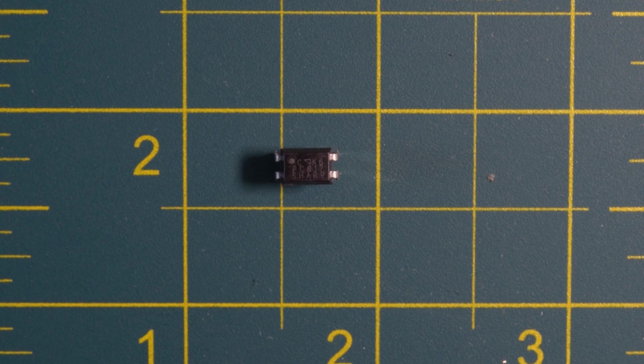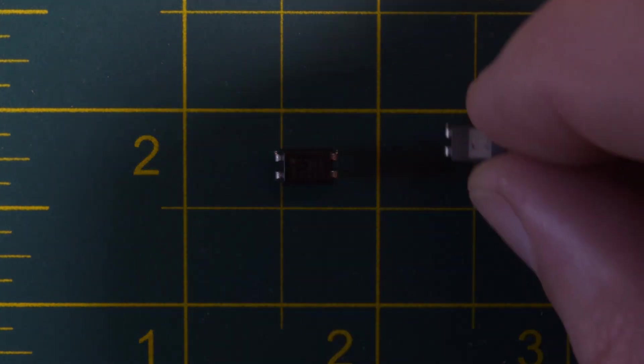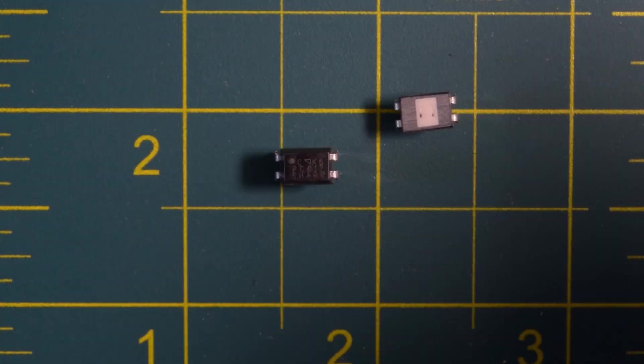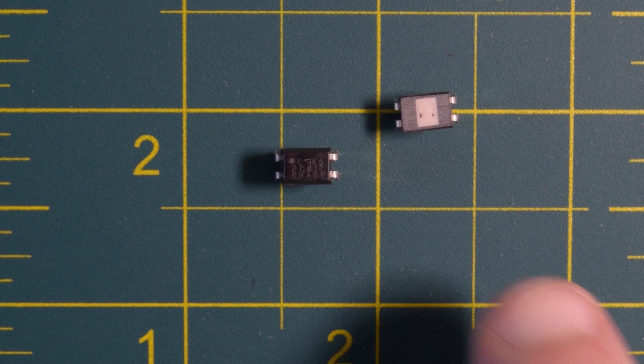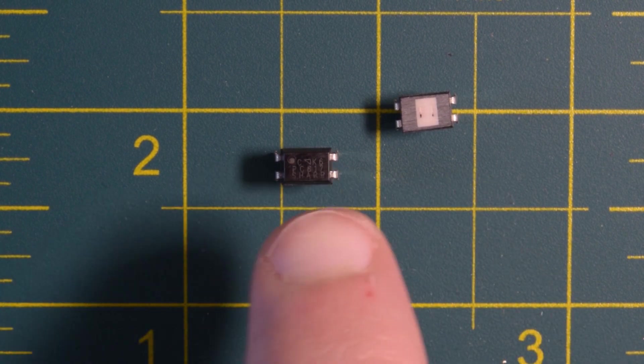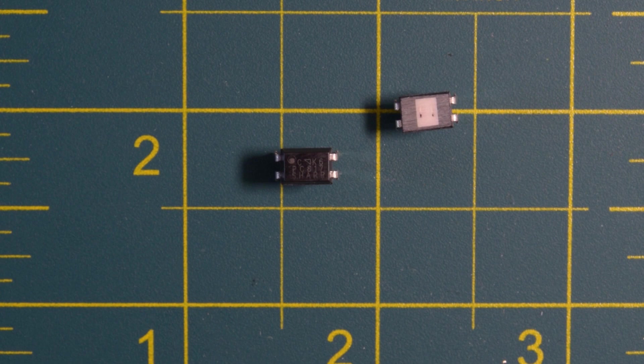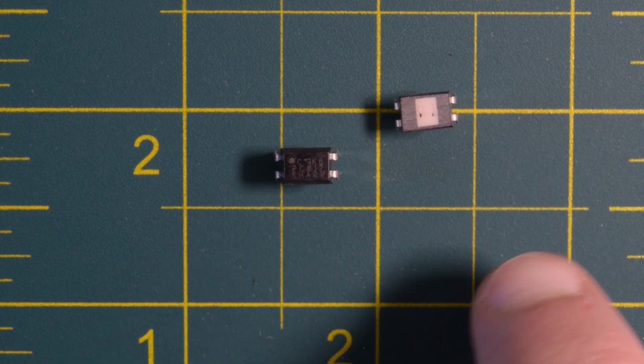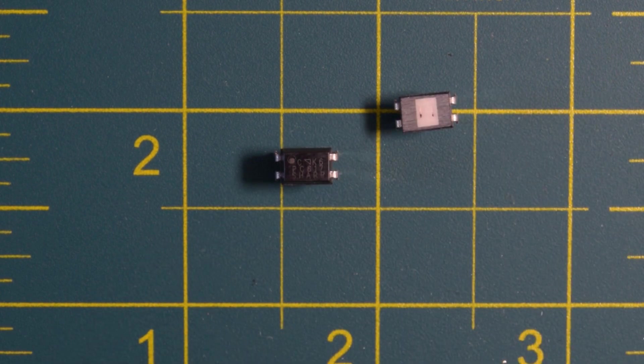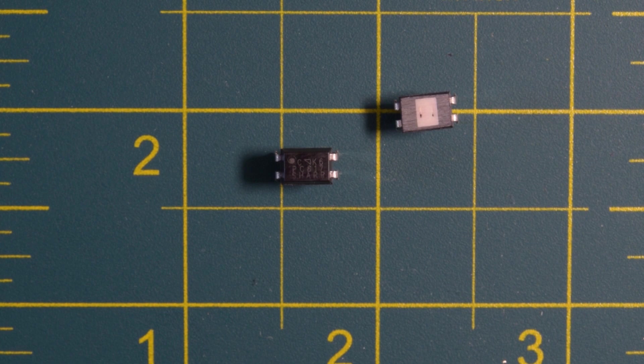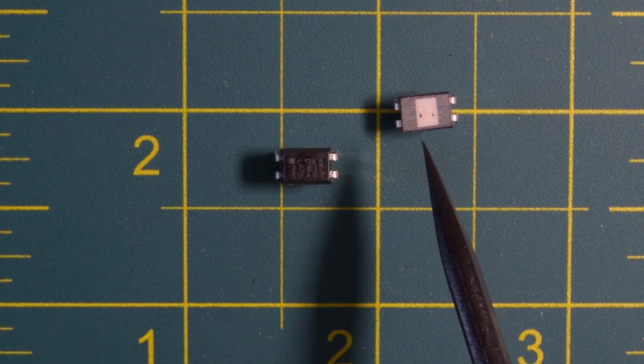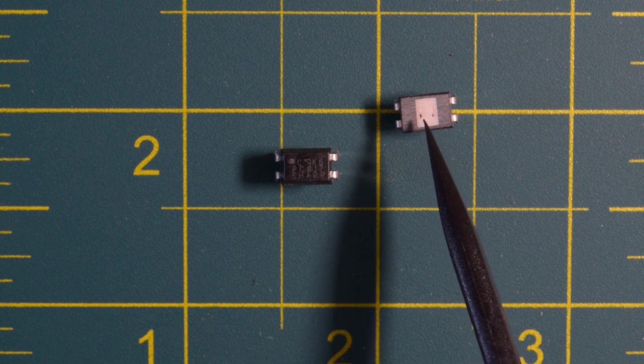So this here is our PC817, and if you sand down the top a little bit, you'll get this. So you see that inside this black case is actually some white, and the white is probably there because they need that LED, usually it's an infrared LED, to transmit light from one side to the other.